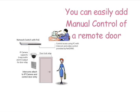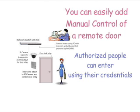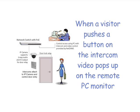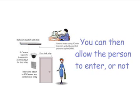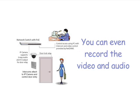You can easily add manual control of a remote doorway. Authorized people can enter using their credentials. But when a visitor appears, they can push the button on the intercom and cause video to pop up on a remote PC. You can see and talk to the people at the door and allow the person to enter or not. And of course, you can even record the video and audio.